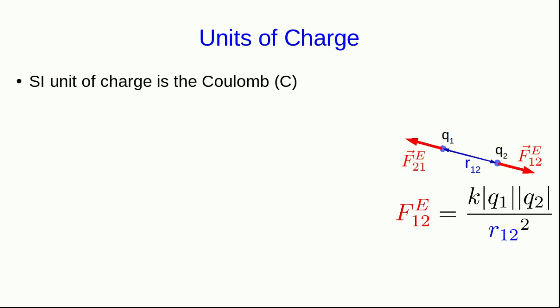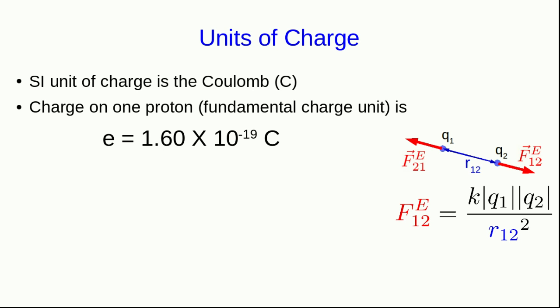The SI unit of charge is the Coulomb, and we'll see in a moment how to think about what a Coulomb is, but one way of thinking about it is to think of it in terms of the fundamental charge unit. The fundamental charge unit e, which is the charge on a proton, is 1.6 times 10 to the negative 19 Coulombs. Or in other words, it takes around about 5 times 10 to the 18 protons to give you 1 Coulomb of charge.